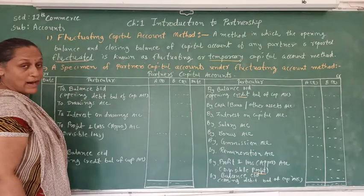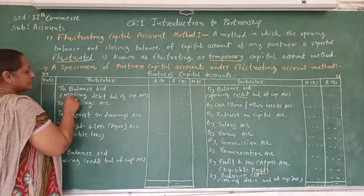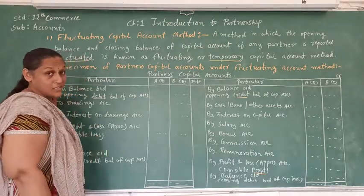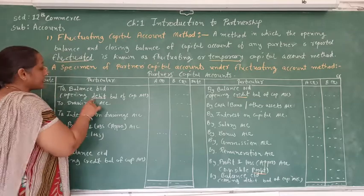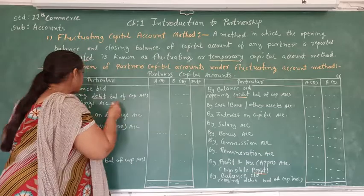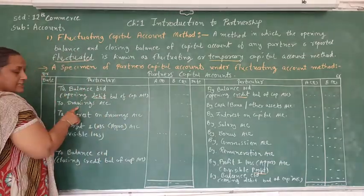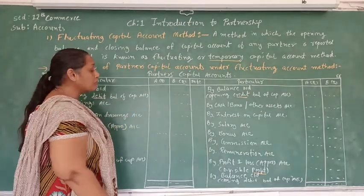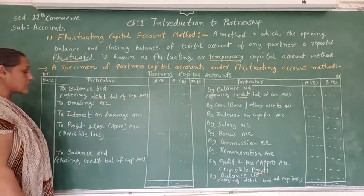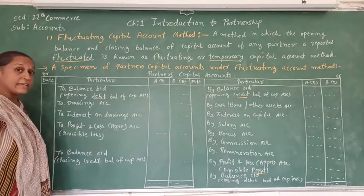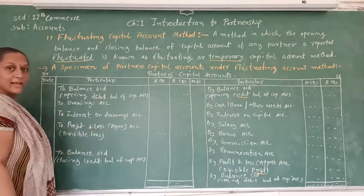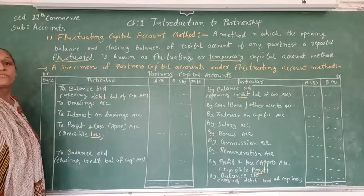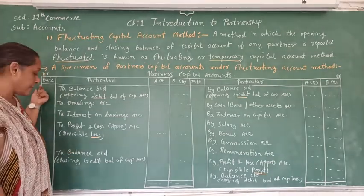On the debit side of the partner's capital account, if any debit balance is there — generally there will be no debit balance of the capital account, but sometimes if a debit balance exists, it is written on the debit side. The next item is drawings: if any partner draws money from the partnership firm, that is written on the debit side. After that, if any interest is charged from the partner, that is also debited. And if any loss occurs in the partnership firm, that is also debited.